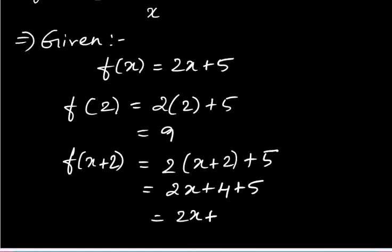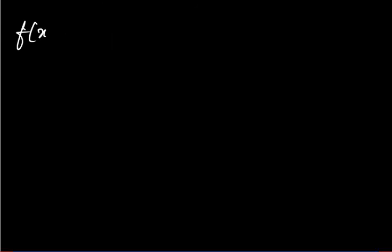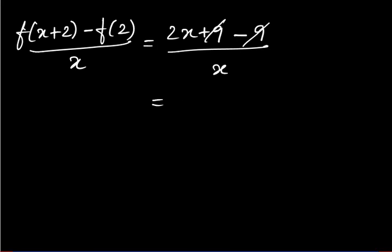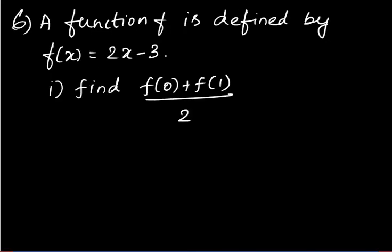Expanding: 2(x+2) + 5 = 2x + 4 + 5 = 2x + 9. Now substitute: [f(x+2) − f(2)] / x = (2x + 9 − 9) / x = 2x / x = 2. So the answer is 2.